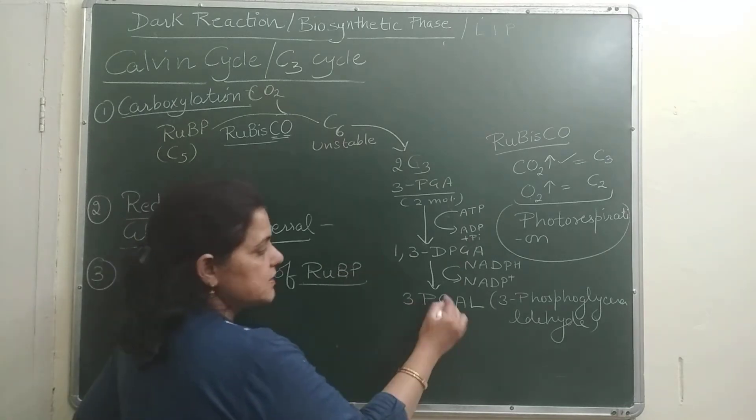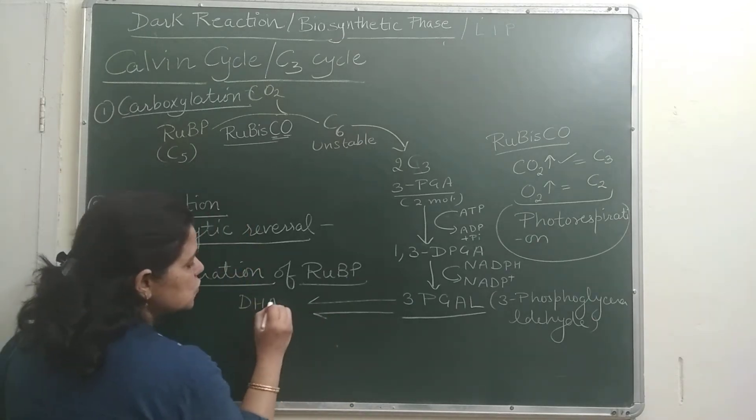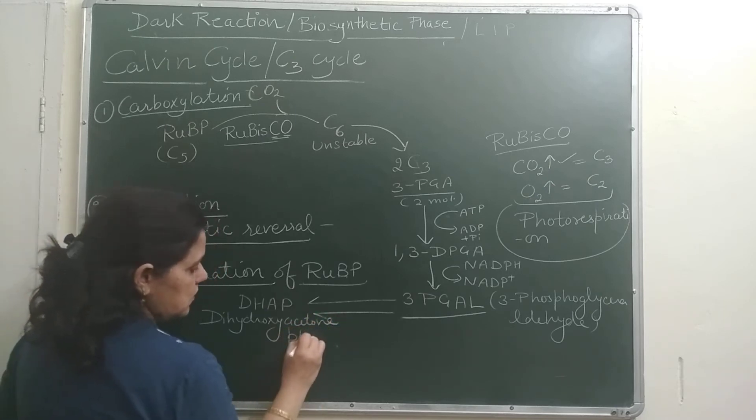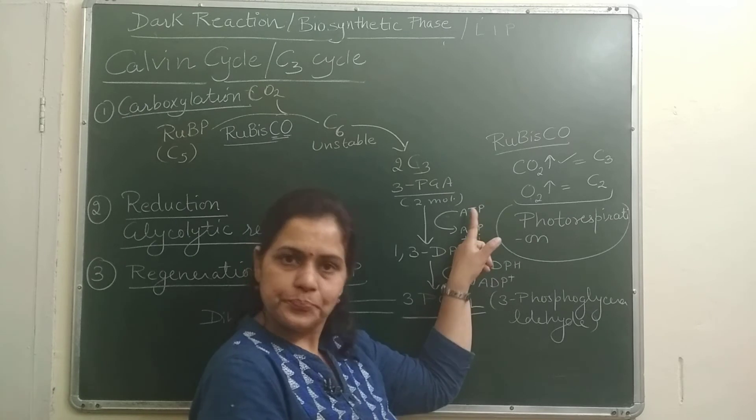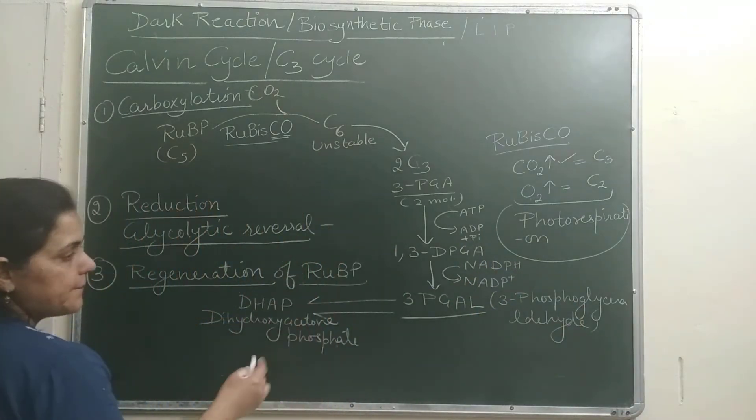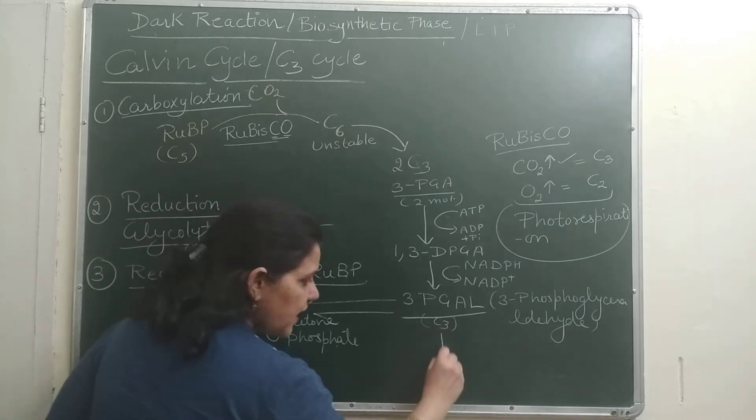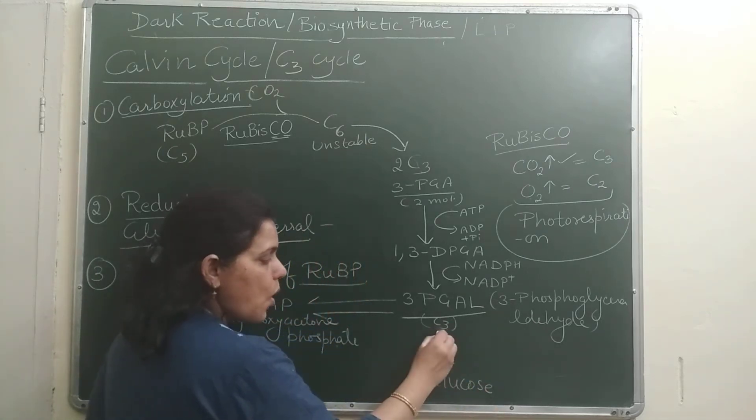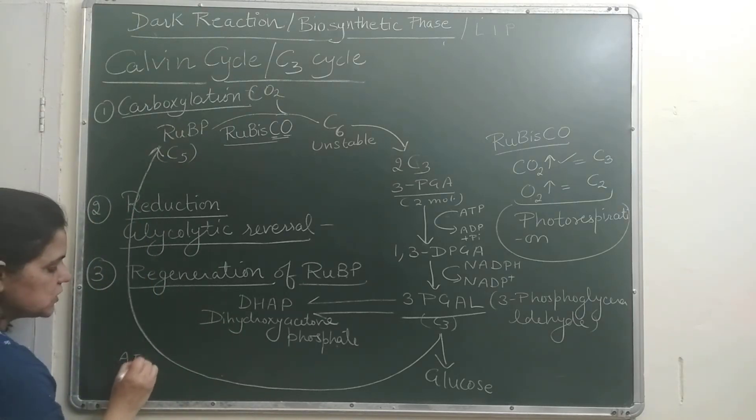After this is formed, what will happen next? This 3-PGAL is isomeric to dihydroxyacetone phosphate, DHAP. Now what will happen? We have seen ATP used, we have seen NADPH used. Next what will happen? This isomeric C3 compound will make one molecule of glucose. And then what will happen? The rest of 3-PGAL will help in regeneration of RuBP. And RuBP can regenerate, there will be ATP consumed.